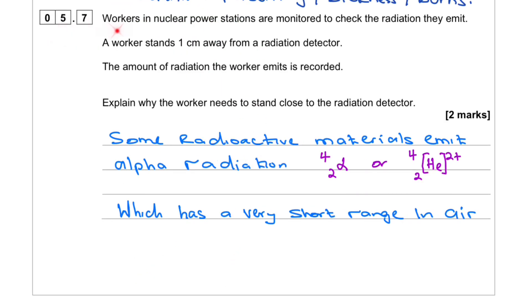Question 5.7. Workers in nuclear power stations are monitored to check the radiation they emit. A worker stands one centimeter away from a radiation detector. The amount of radiation the worker emits is recorded. Explain why the workers need to stand close to the radiation detector.